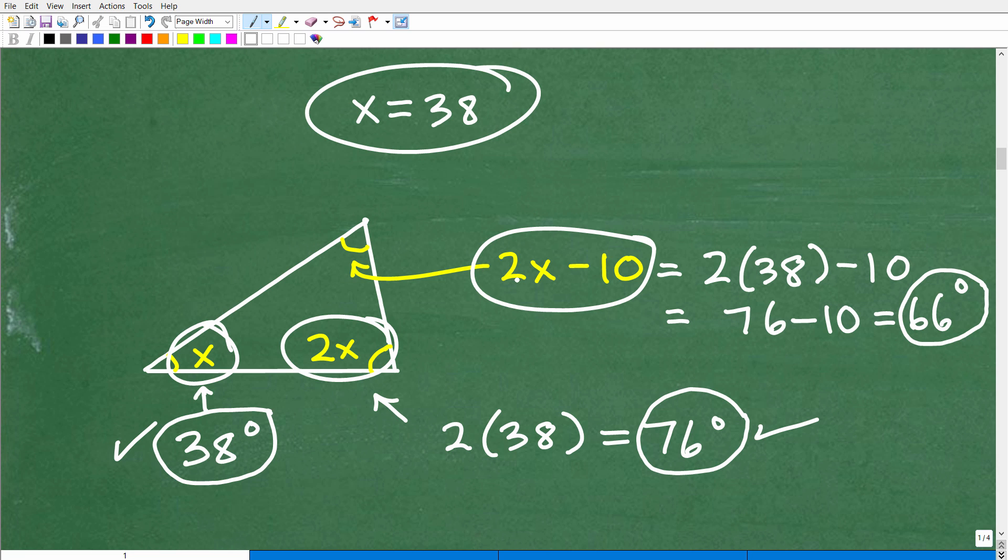And then this angle right here is 2x minus 10. So that would be 2 times 38, because x is 38, minus 10. So that's 76 minus 10, or 66 degrees.